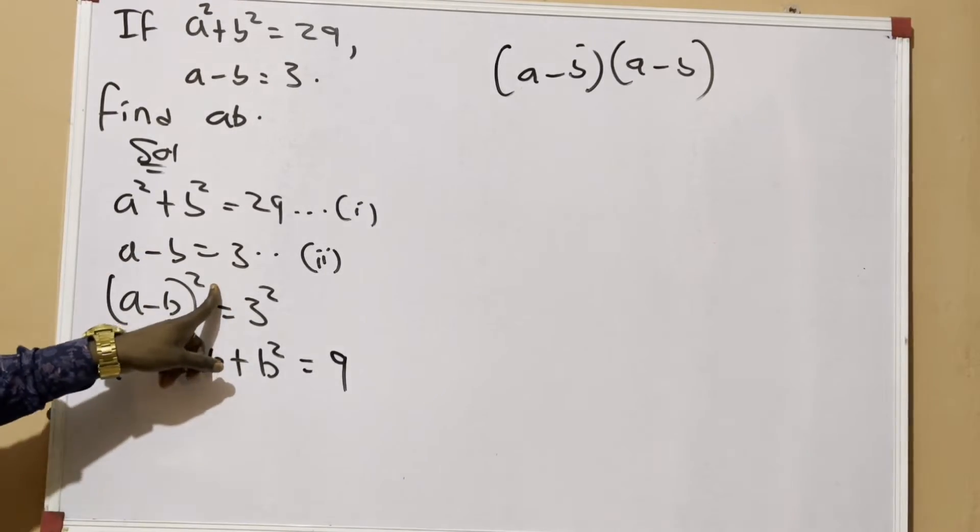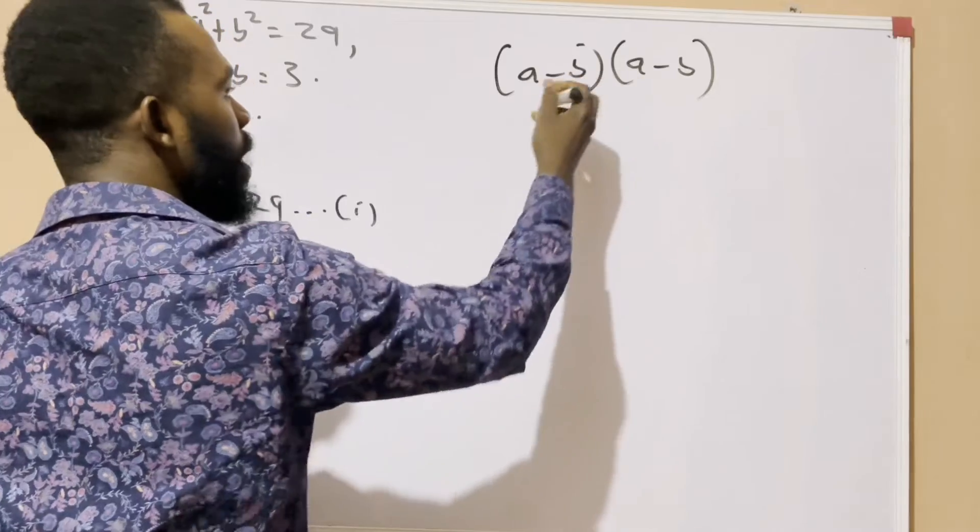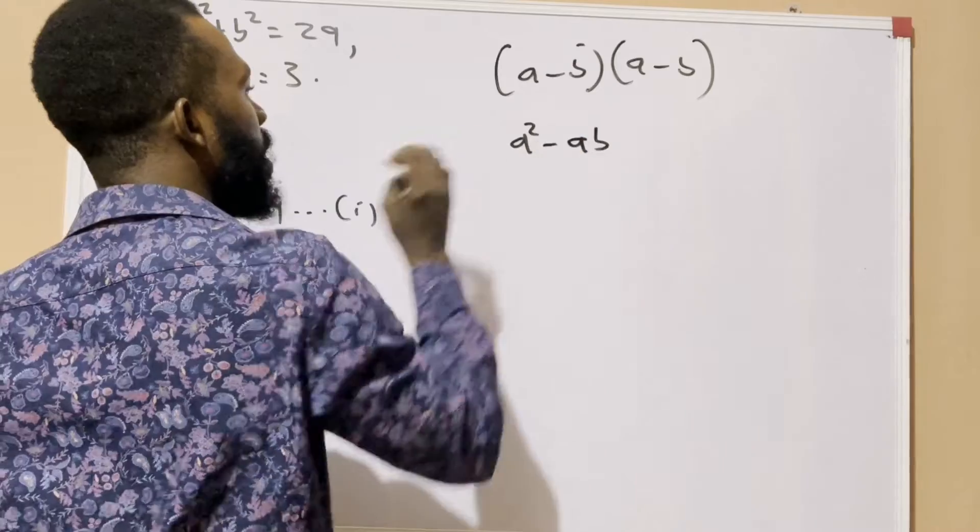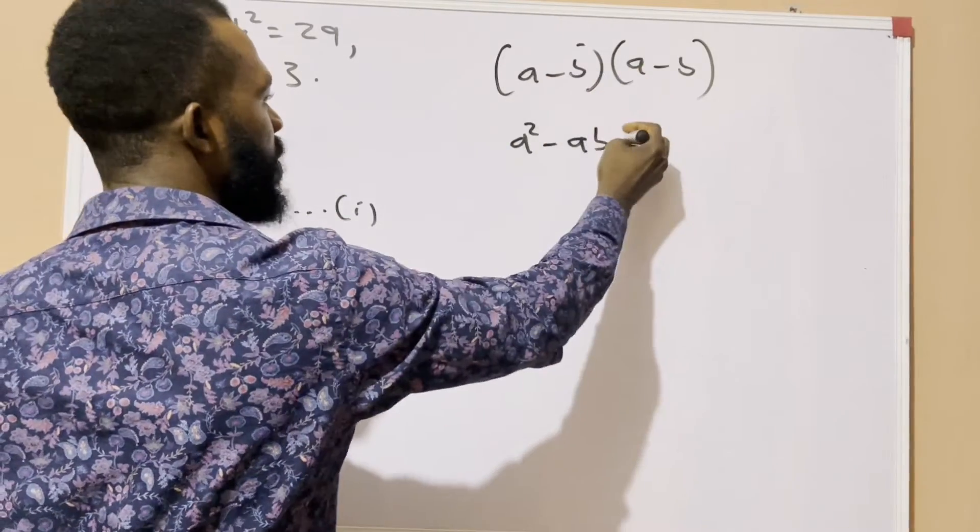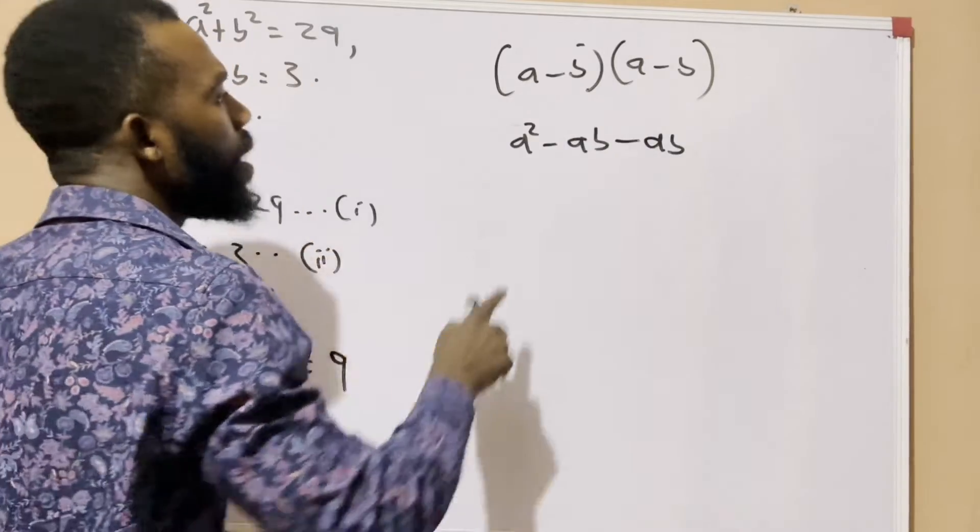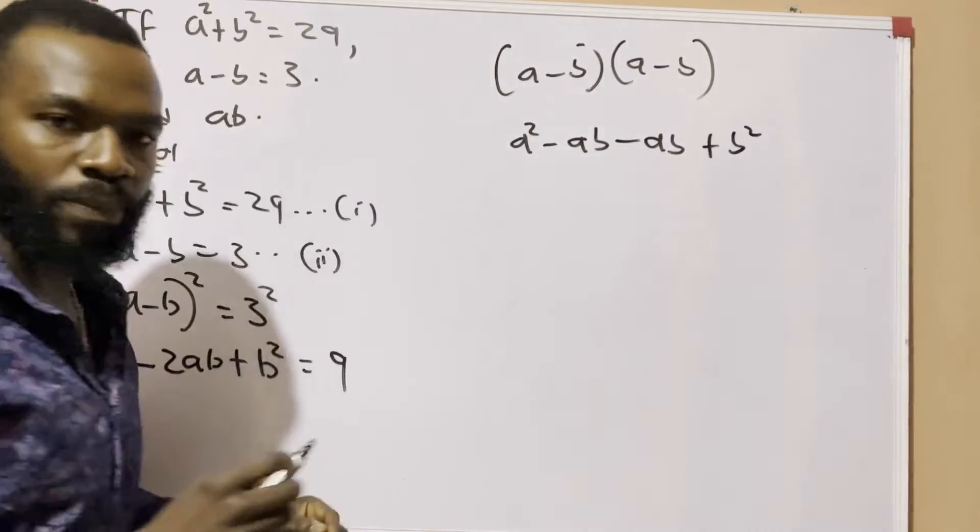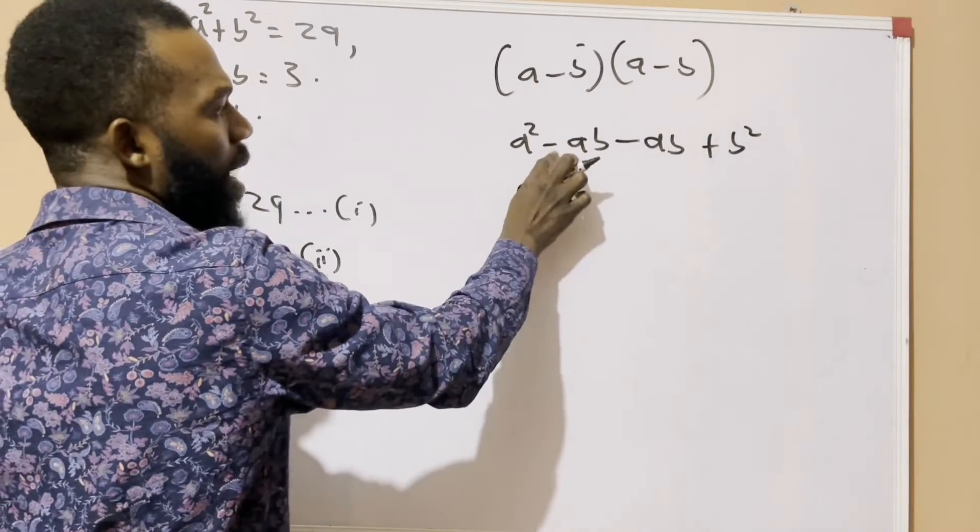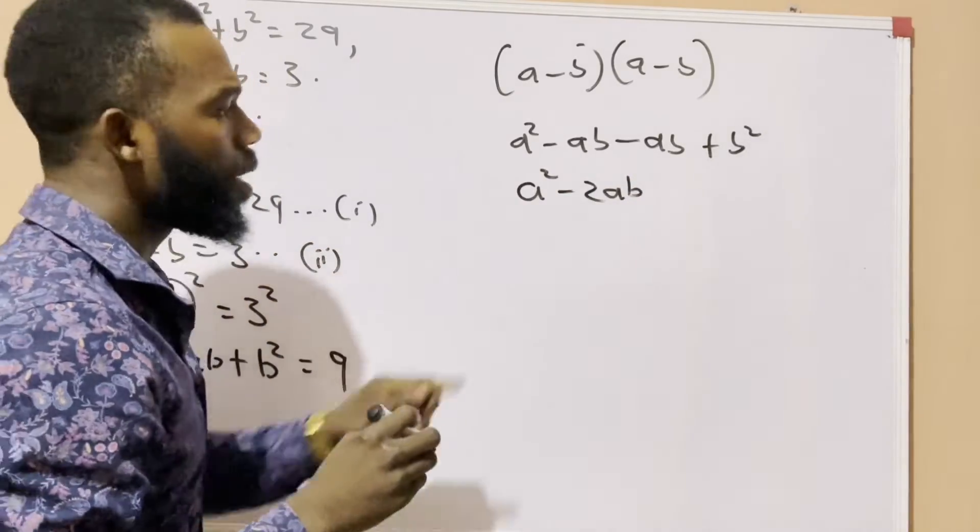a multiply a gives me a², and a multiply -b gives me -ab. Now -b multiply a gives me also -ab, and -b multiply -b gives me a positive b². So it becomes a² - ab - ab, which gives us -2ab plus b².